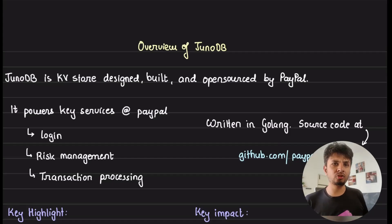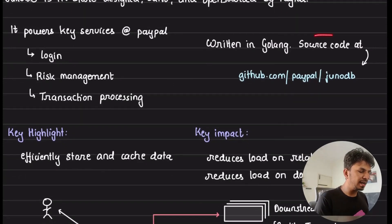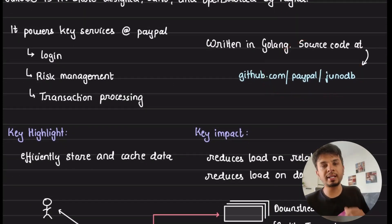So JunoDB is a distributed key-value store which is designed, built, and open sourced by PayPal. The best part of it being open source is that you can find the entire source code at github.com/PayPal/JunoDB. It's written entirely in Golang. I highly recommend you to go through that.